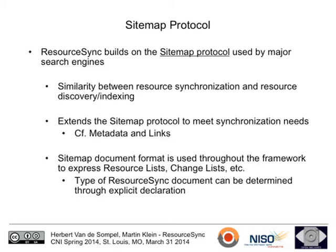A strong argument in favor of sitemaps is the similarity between purposes: sources use sitemaps to advertise their resources to search engines, and if you compare that with a resource list — which is an inventory of your resources — the parallel is clear. It logically makes sense to build on top of sitemaps. The protocol wasn't made for us, so we needed some enhancements, which are all fine with Google and similar engines — implementing Resource Sync does not violate Google policy. A beautiful aspect of Resource Sync is that we reuse the sitemap protocol format throughout the entire framework: resource list, change list, change notification — all based on the same format, making it easy to comprehend and developer-friendly.